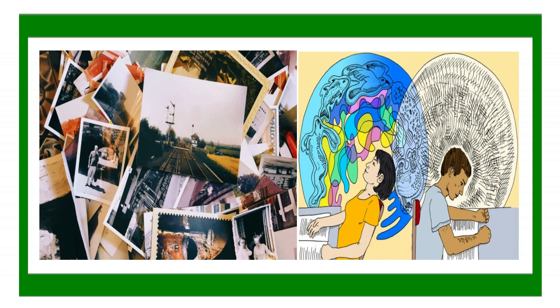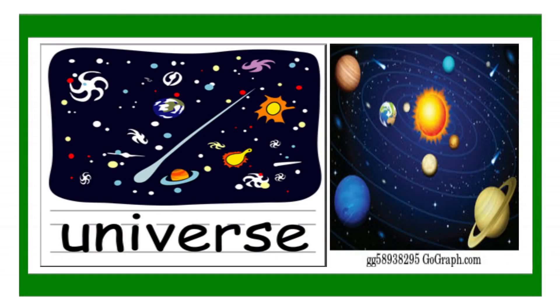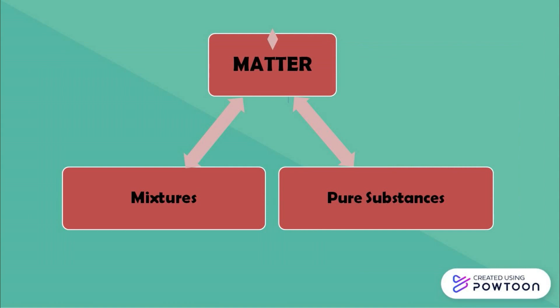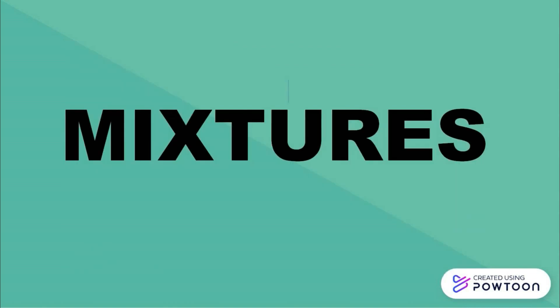In fact, everything in the universe itself is made up of matter. Matter is divided into two physical methods — we have mixtures and pure substances. In science, quarter one, we are going to discuss all about mixtures.